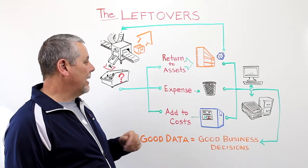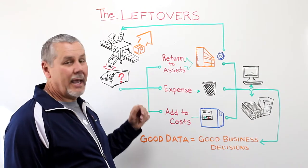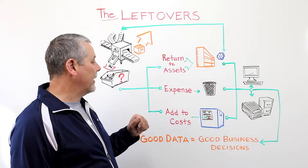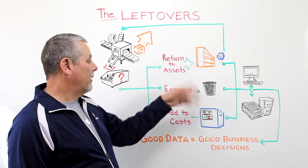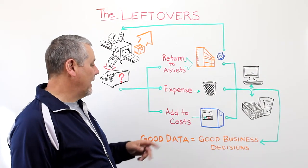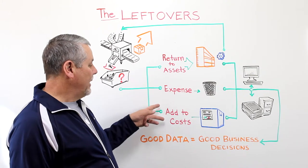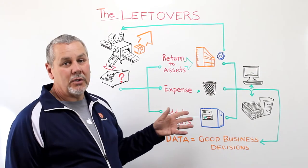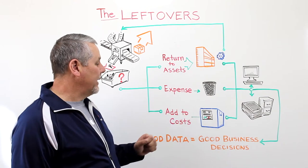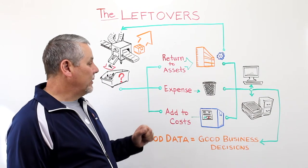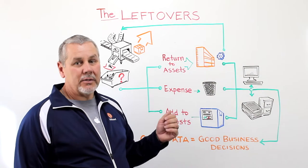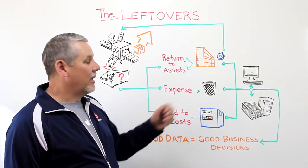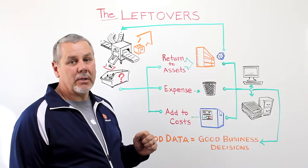For the second option, you do the same thing — you scan it, expense it. That's a choice you have in Fishbowl Manufacturing, and then throw it away, and your accounting is updated. For the third option, you do the same thing: scan it, and you're just going to choose to add it to the cost of the final product. When you do that, because Fishbowl is seamlessly integrated with QuickBooks, it all gets updated in QuickBooks dynamically.